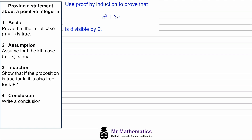In this example we've been asked to prove by induction that this is divisible by two. For the basis, the first step, we show that when n equals one the condition is true. We substitute one into our function of n. So f of one equals one squared plus three lots of one. One plus three is four, and four is clearly divisible by two.